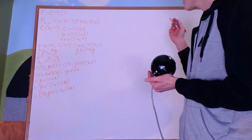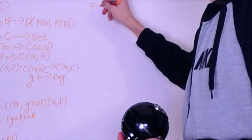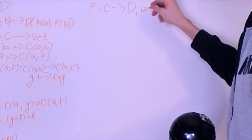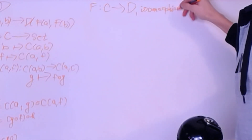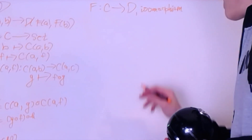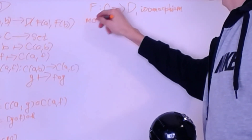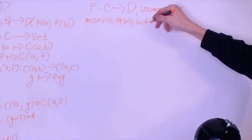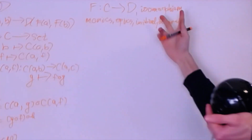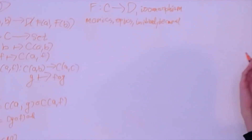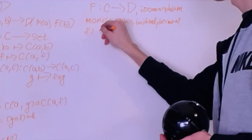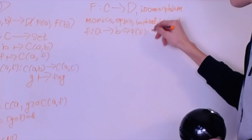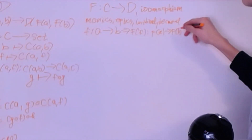Now let me prove a property of functors in general. If I have a functor from C to D that has a two-sided inverse — that is, it is an isomorphism — then it will preserve monics, epics, initial objects, and terminal objects. Note that it has to be an isomorphism; this is not true in general. So if I have a monic f from A to B, then the new arrow F(f) from F(A) to F(B) is also a monic.